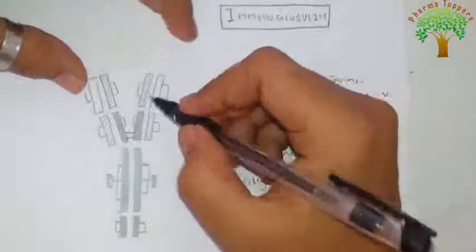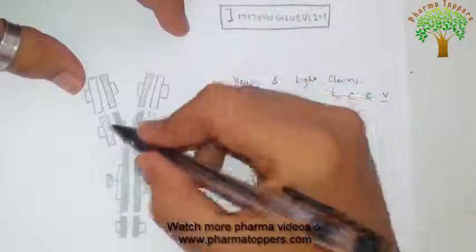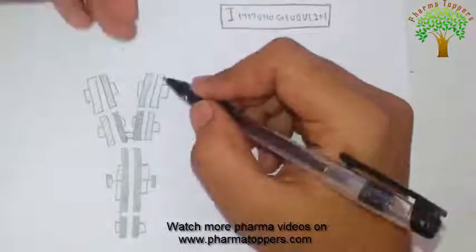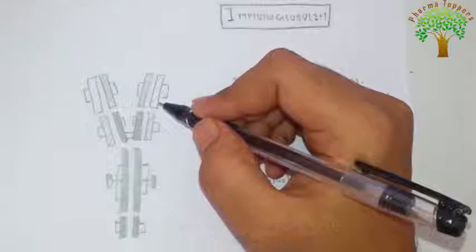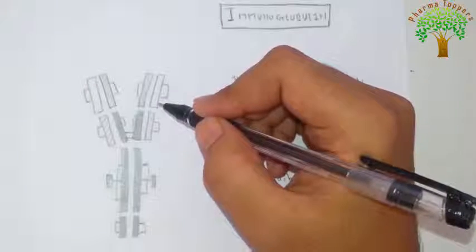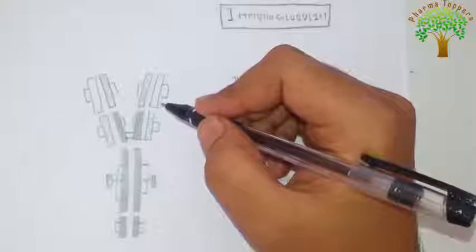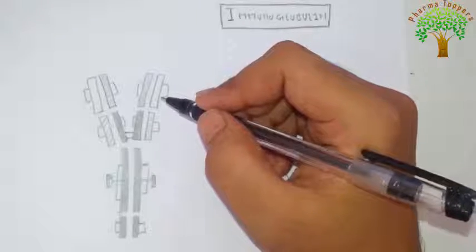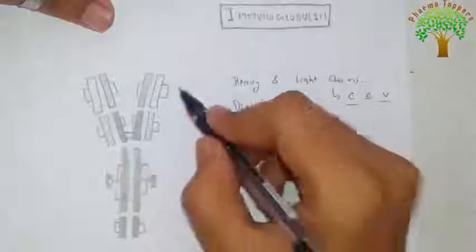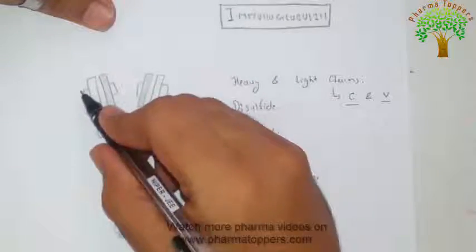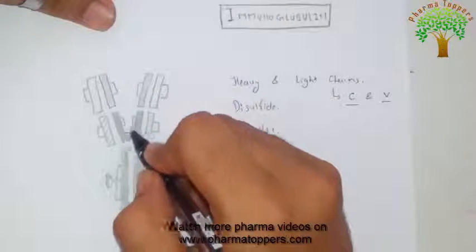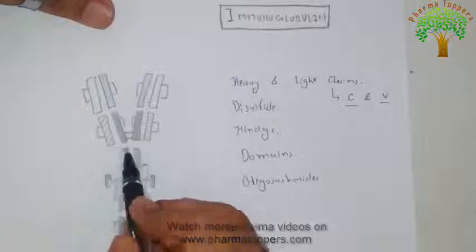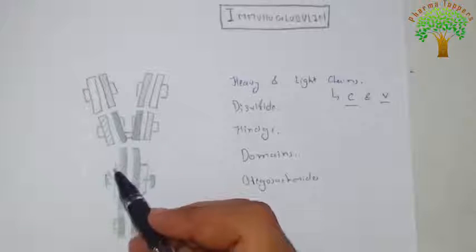The two remaining blocks in the heavy chain are the variable regions. Similarly in the light chains, these are the constant regions and these are the variable regions. Now within this structure, there may be intra-chain or inter-chain disulfide bonds. As you can see here, all of these are the intra-chain disulfide bonds, while these two are the inter-chain disulfide bonds.